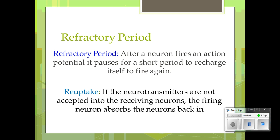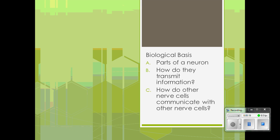Sometimes if the neurotransmitters are not accepted into the receiving neuron, the firing neuron absorbs them back in. The neurotransmitters that are not accepted get retaken by the firing neuron. This covered part 2 — how information is transmitted. See you in class.